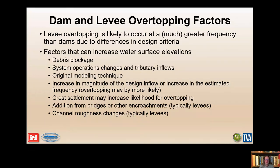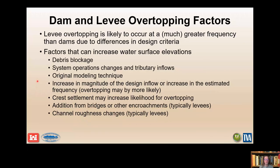The hydrologic hazard curve frequency of overtopping is really the primary factor for this potential failure mode. Levees can overtop at much greater frequency than dams due to differences in design criteria. There are many factors that can also increase water surface elevations, including debris blockage, system operation changes on a large river system, changes in modeling techniques — such as 2D effects with RAS-2D as opposed to one-dimensional flows — increases in magnitudes or estimated frequency of floods, and sediment.